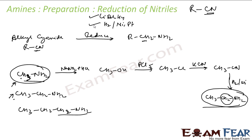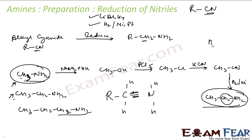To understand the reaction mechanism, consider RCN. The metal catalyst breaks hydrogen into H+ and H−. Since nitrogen is more electronegative, nitrogen carries a slight negative charge and carbon carries a slight positive charge. So H+ attacks the nitrogen and H− attacks the carbon; this happens twice as both bonds break.